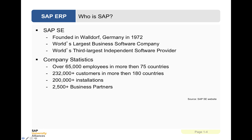We're going to look at who is SAP, which stands for Systems, Applications, and Products in Data Processing. The company was founded by up to four people who left IBM, and they started the company in Waldorf, Germany, where the headquarters building still is, and we'll look at that in the lecture.